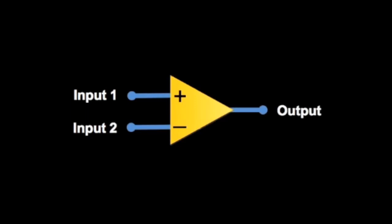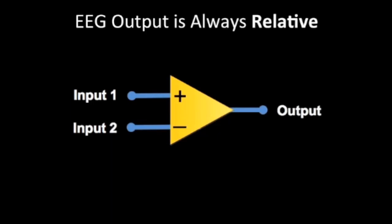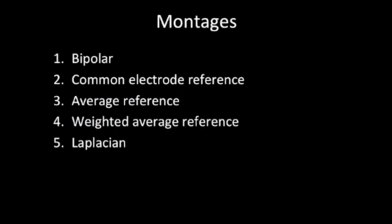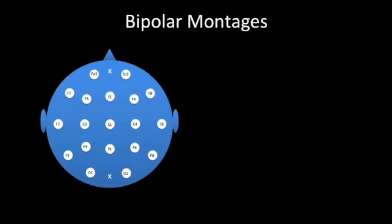One of the keys to a deeper understanding of EEG interpretation is understanding the basis of EEG montages. We must remember that EEG is based on the differential amplifier, meaning EEG output is always relative. For this reason, we have a variety of ways of looking at EEG, which we call montages. We will go through four of these montages in this video. The most commonly used are bipolar montages, based on comparing a single EEG electrode tracing to its adjacent neighbor.